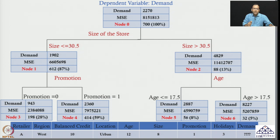We have various parameters related to the retailers: region, balance credit, location, age, size, promotion, and holidays. Using these attributes, I have to find out the demand of these retailers.